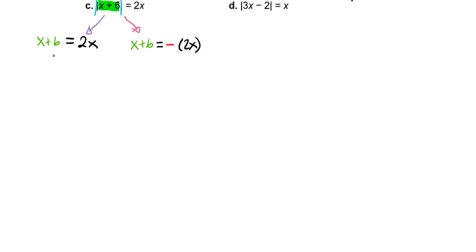So we'll solve our left side by subtracting x from both sides, and we'll get 6 equals x as our first answer. And it's positive, so we know that when we plug it back into our 2x over here, we'll still have a positive answer. So we can keep that.